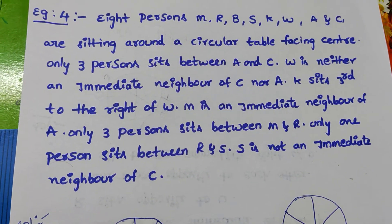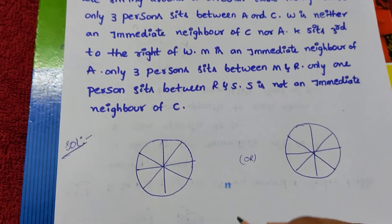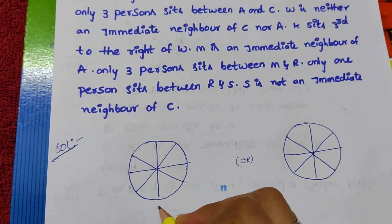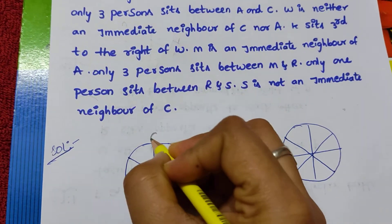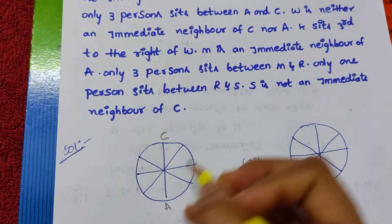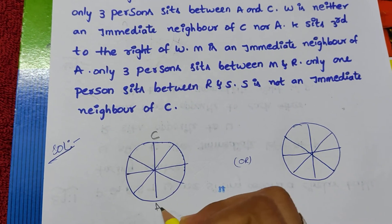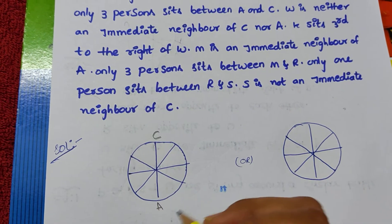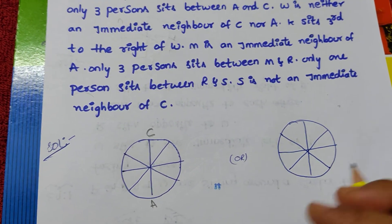First clue: Only 3 persons sit between A and C. I am taking A here and C here — you can place them anywhere. I started here with A and C.